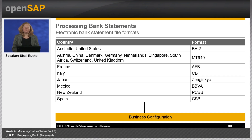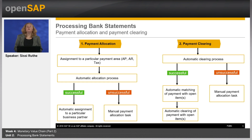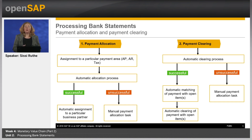For your business, it is relevant to process bank statements completely and not leave any bank statement item — such as customer payments, own payments to suppliers, or bank interest and fees — unprocessed. Many of these items allow a direct posting, like bank interest or fees to cost, as well as clearings, especially clearings of all internally initiated payments, because they should be executed without any difference.